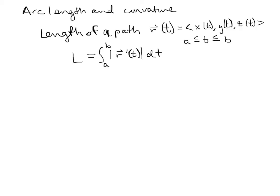What this is doing is adding up tangent lines. If you take the derivative of the position vector — r'(t) — it is parallel to the tangent line, so it can be considered the tangent vector. The magnitude finds the length of that vector, and then the integral adds up all of those lengths of tangent vectors.